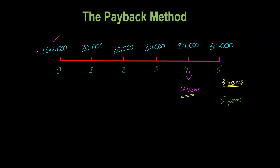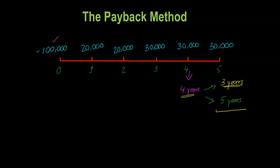So the payback method rule is this: calculate the actual payback period and compare it to your desired payback period. If the actual is more than desired, reject. If the actual is less than the desired, accept. In finance textbooks, these desired paybacks are often written as cutoff points — the benchmarks to which you compare your actual payback period in order to make your investment decision.